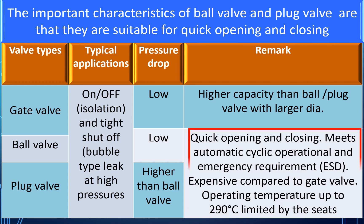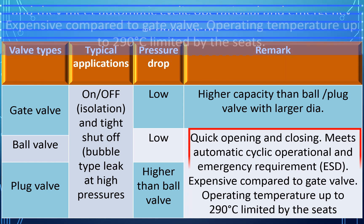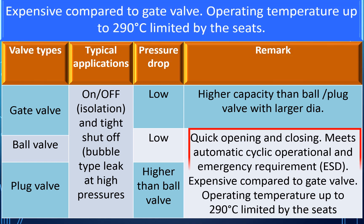The important characteristics of ball valves and plug valves are that they are suitable for quick opening and closing, and they meet automatic cycle operational and emergency requirements. They are more expensive compared to gate valves. Operating temperatures are limited to up to 290 degrees centigrade, limited by the seats.